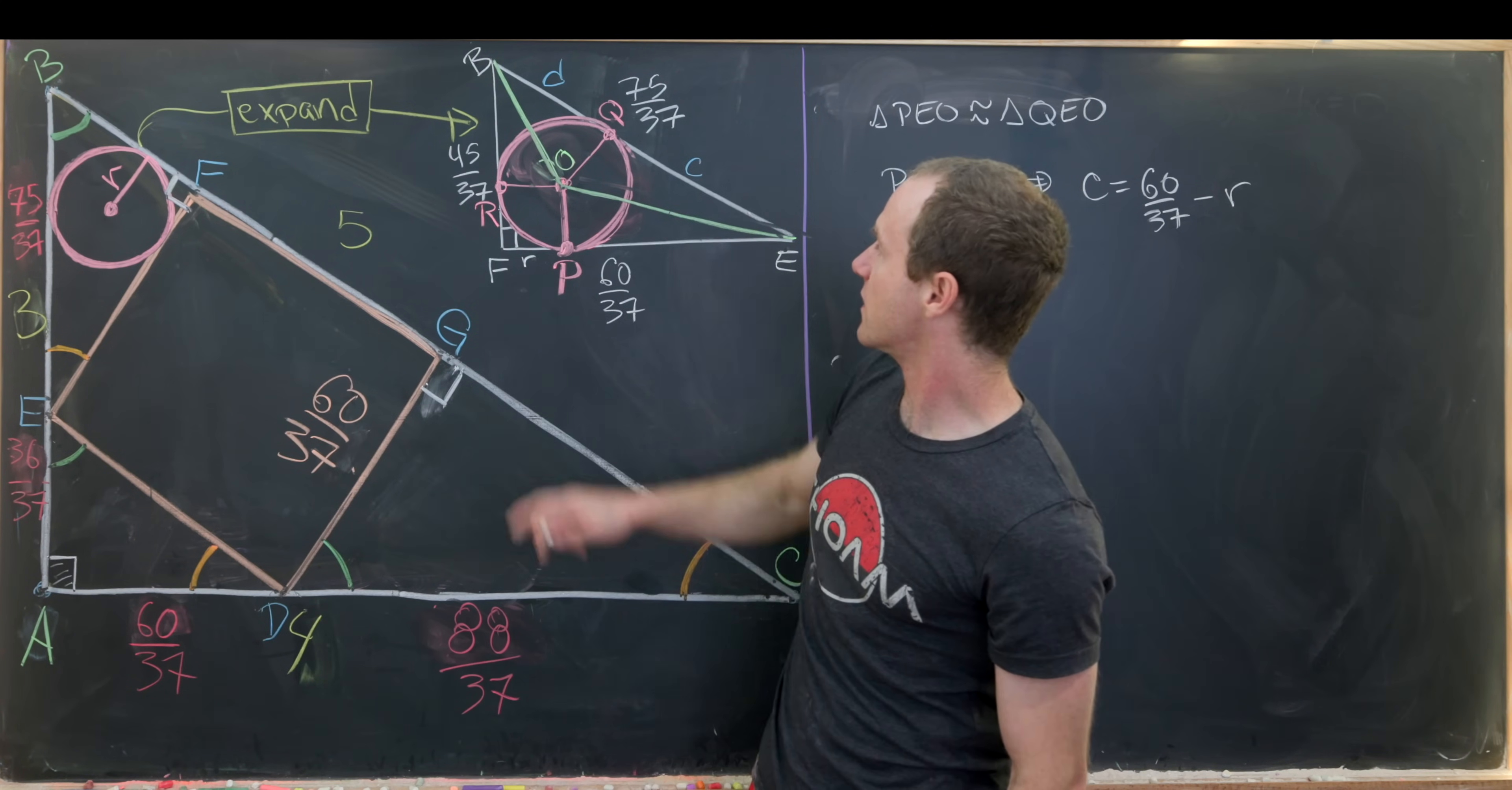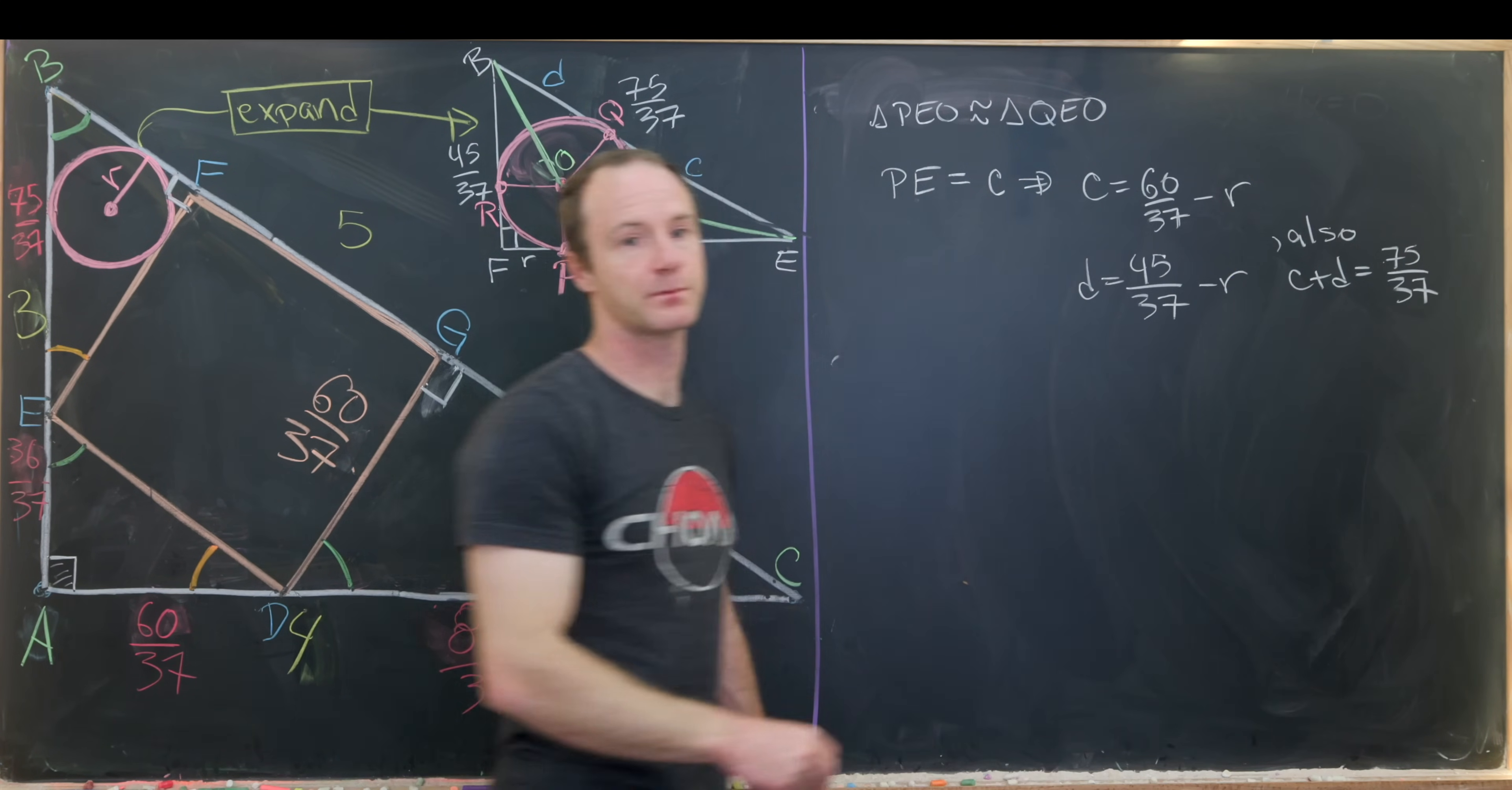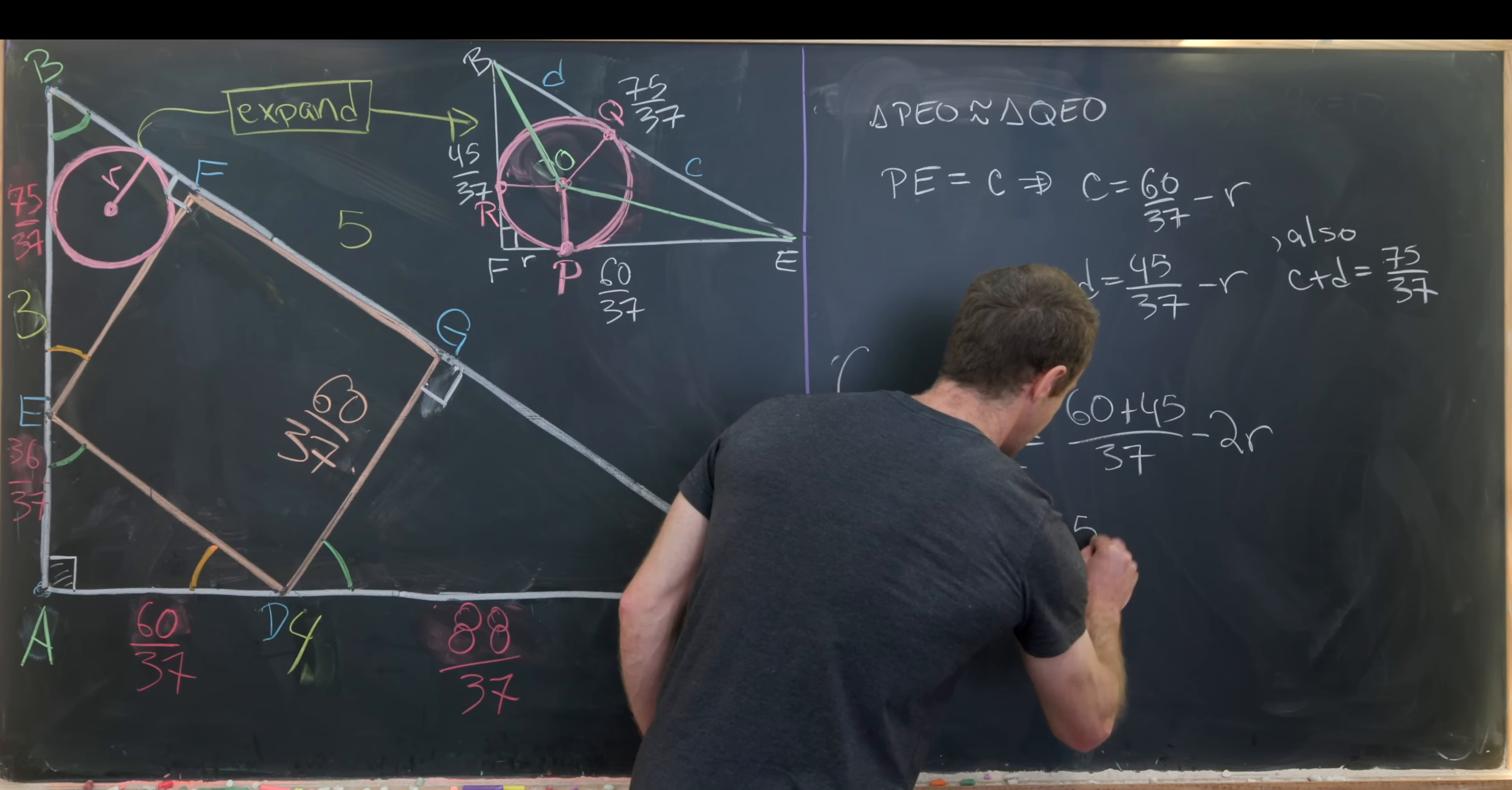Now we can play the same game with this triangle out here. So triangle BOR and triangle BOQ are also similar. And so that gives us a similar sort of equation. In this case, it's d equals 45 over 37 minus r. And then finally, we know that c plus d is 75 over 37. So that means we can add these two up, and we'll see that 75 over 37 is going to be the same thing as 60 plus 45 over 37 minus twice r. That gives us a pretty simple equation to solve for r. We'll see that r in this case is 15 over 37.